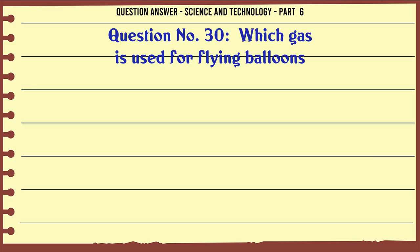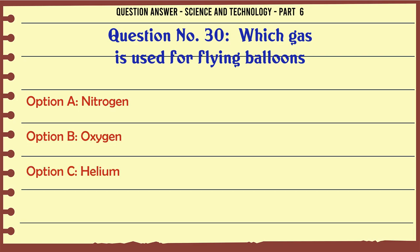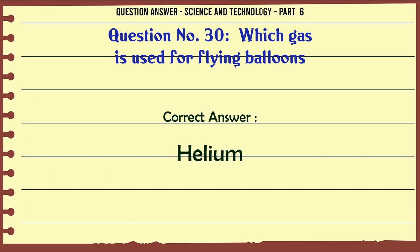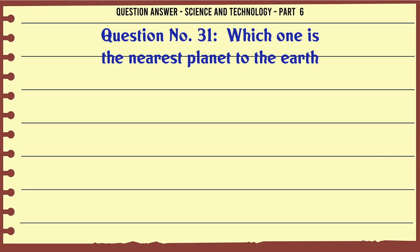Which gas is used for flying balloons? A. Nitrogen. B. Oxygen. C. Helium. D. None of the above. The correct answer is Helium.